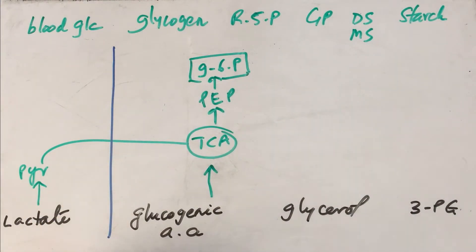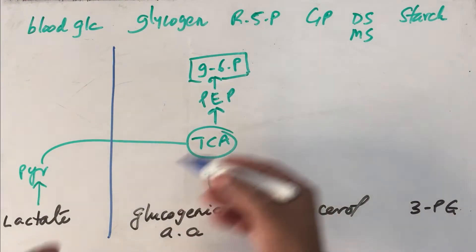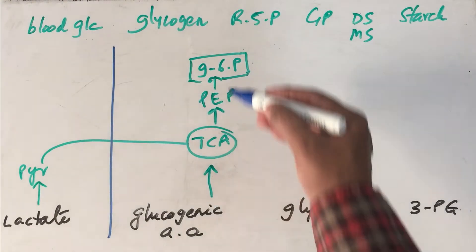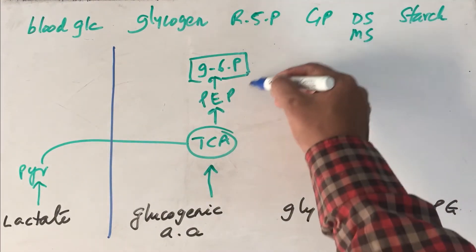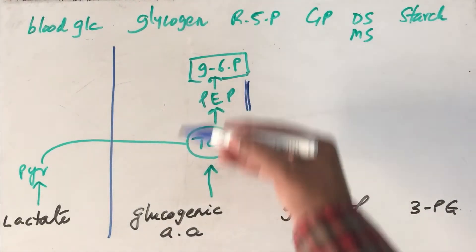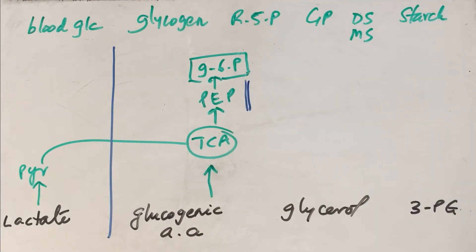You will see that lactate is converted to pyruvate. Pyruvate will become, getting into TCA cycle intermediates and then finally it becomes phosphoenol pyruvate. And then finally through gluconeogenesis, this is the main pathway, through that it becomes glucose 6-phosphate.